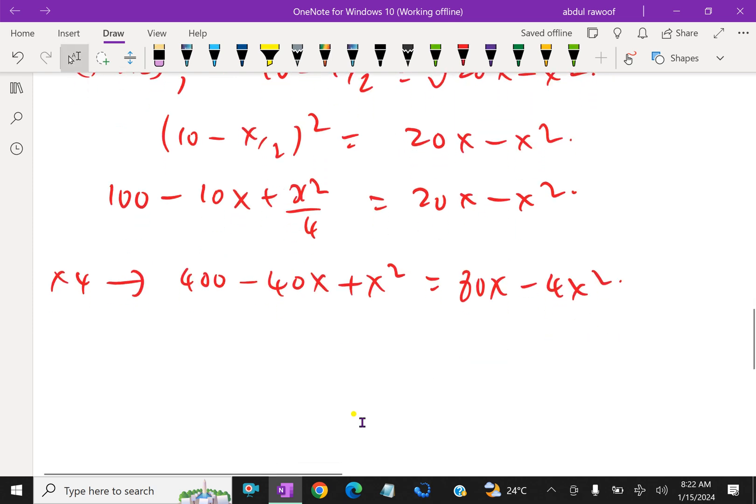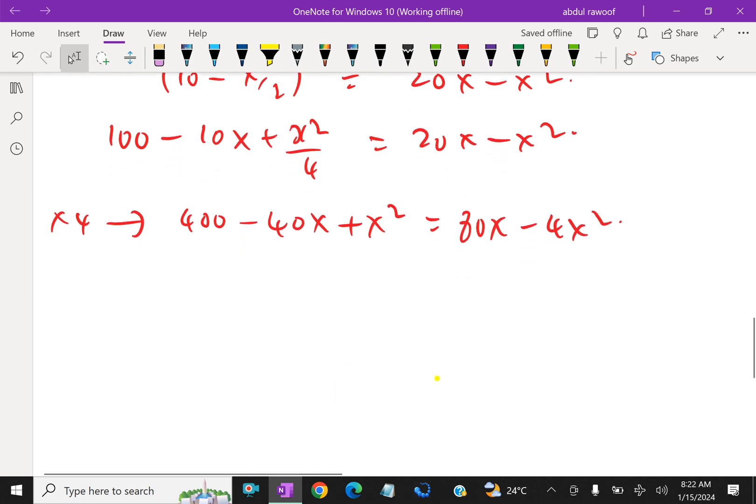Collecting x terms, constants, and x squared on one side. So it is x squared plus 4x squared, which is 5x squared, and minus 40x minus 80x, which is minus 120x, plus 400 equals 0.